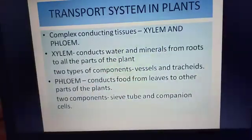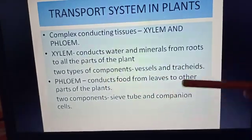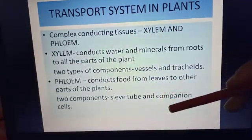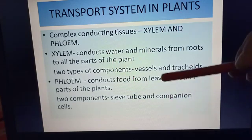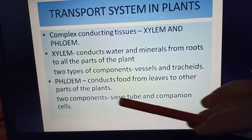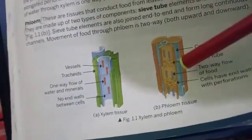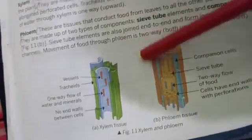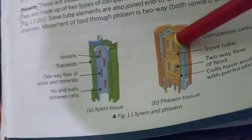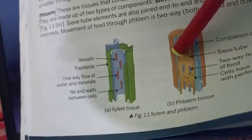Next comes the conducting tissue — phloem. Phloem helps in the conduction of food from leaves to other parts of the plant. The cells present to carry this food from the leaves to other parts are sieve tubes and companion cells. If you can see the diagram, this entire structure is known as phloem, and it consists of a sieve tube.